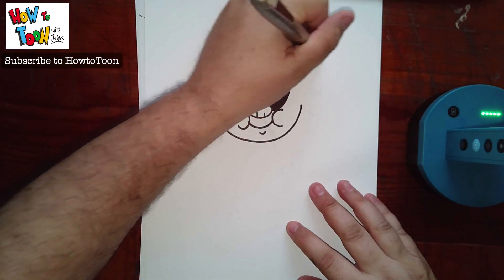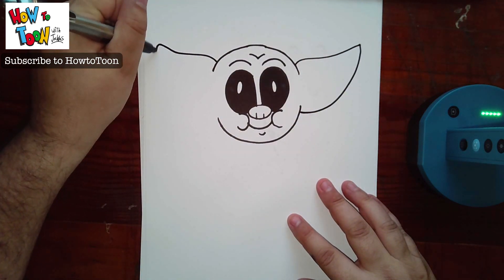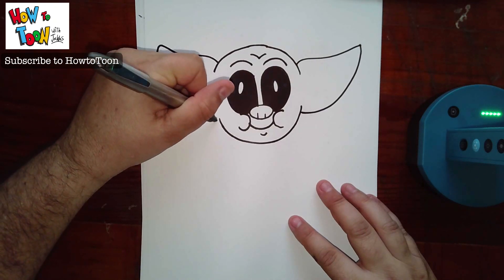Good. Now for the ears. Come out. Point. Back in. Remember, it's symmetrical. So whatever's on the left is on the right. Out. And back in.